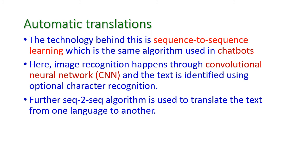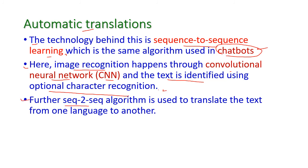The next application is automatic translations. The technology behind automatic translation is the sequence-to-sequence machine learning algorithm, which is also used in chatbots. Here, image recognition is done through a Convolutional Neural Network (CNN), and text is identified using Optical Character Recognition (OCR). The same sequence-to-sequence algorithm is then used to translate text from one language to another — for example, from English to Telugu or Tamil.